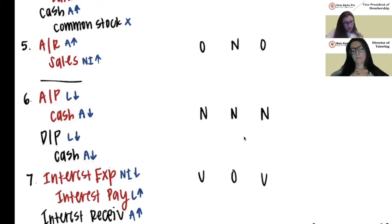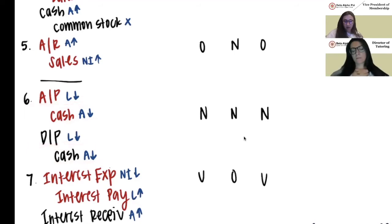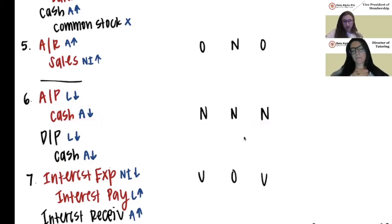Even though it was put into the wrong account — accounts payable instead of dividends payable — total liabilities were decreased the correct way, assets were decreased the correct way, and none of these accounts affected net income. So the answer is no effect, no effect, no effect.